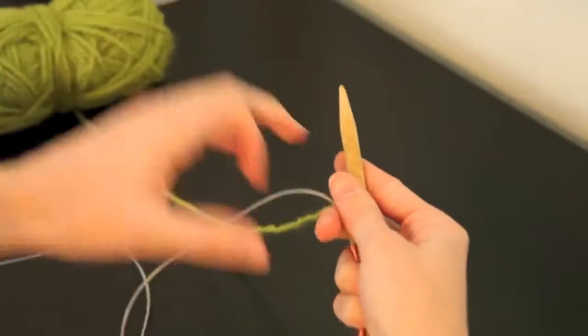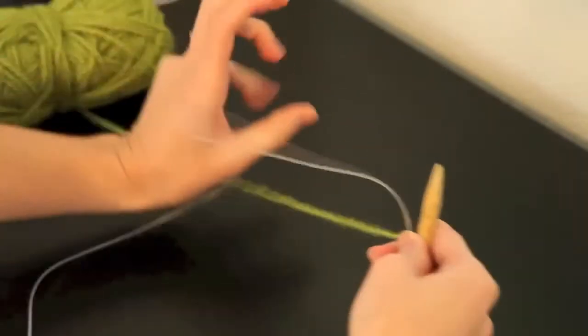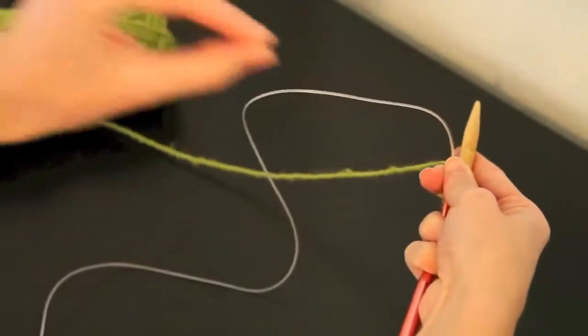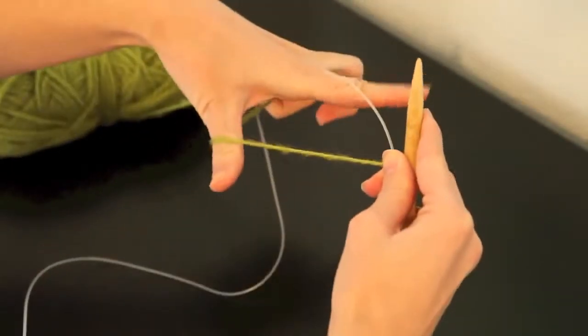And then in your other hand you're going to grab your yarn and your cable, and you want to put your thumb and your pointer finger in between them to hold everything taut. Just like that.